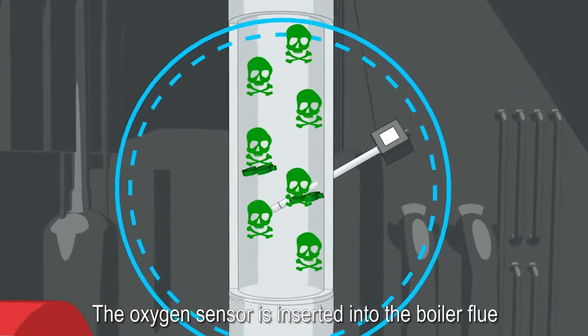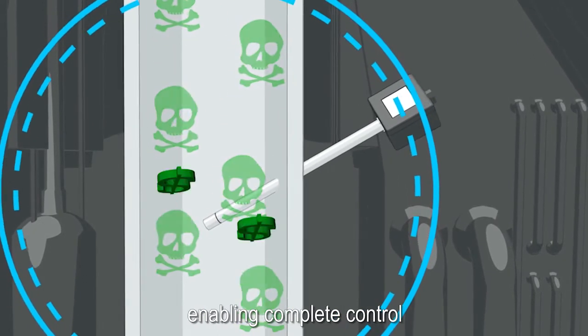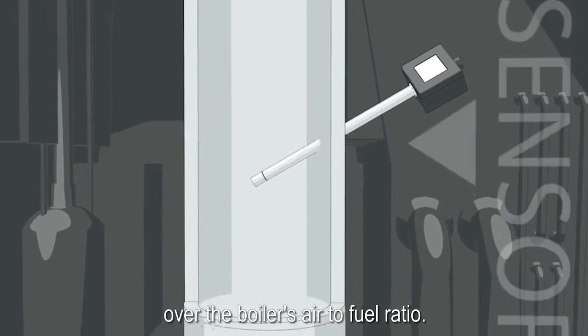The oxygen sensor is inserted into the boiler flute to monitor the oxygen level, enabling complete control over the boiler's air-to-fuel ratio.